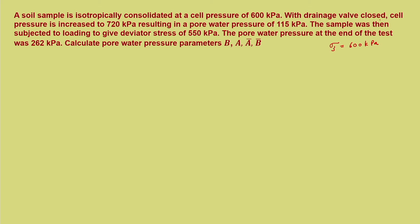With the drainage valve closed, the cell pressure is increased to 720 kilo Pascal, resulting in a pore pressure of 115 kilo Pascal. Please remember the soil is close to saturation, so there will be changes in pore pressure. After the drainage valve is closed and cell pressure is increased to 720 kilo Pascal, sigma 3 at the next stage is 720 kilo Pascal, and the resulting pore pressure u31 equals 115 kilo Pascal.